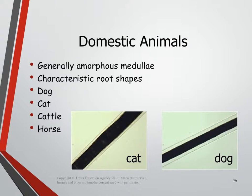The last grouping is domestic animals — animals we have domesticated for our purposes or amusement. They tend to have what we call amorphous medullas. You learned that word 'amorphous' when we talked about glass — it just means that the atoms are not arranged in a uniform pattern, they're scattered all over the place. They have very characteristic root shapes. Some examples of domestic animals would be your dog, cat, horses, cows, and cattle.